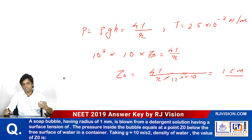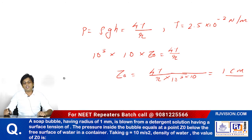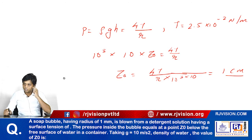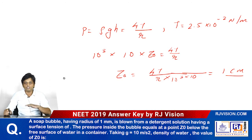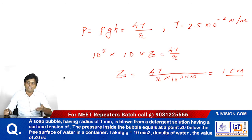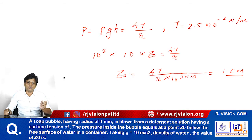This pressure inside the bubble is also equal to the pressure at depth z₀ from the surface of the water. If you go to depth z₀, the pressure there is ρgh — so we use the hydrostatic pressure formula.